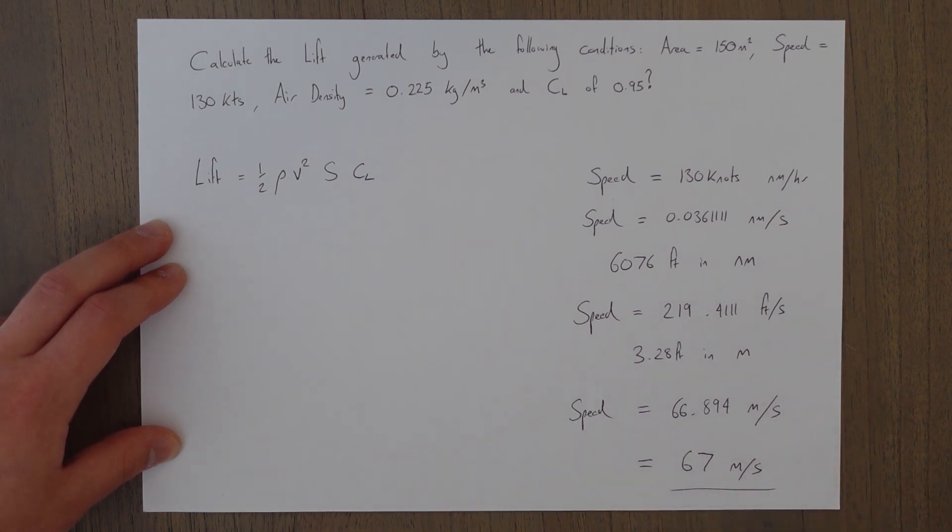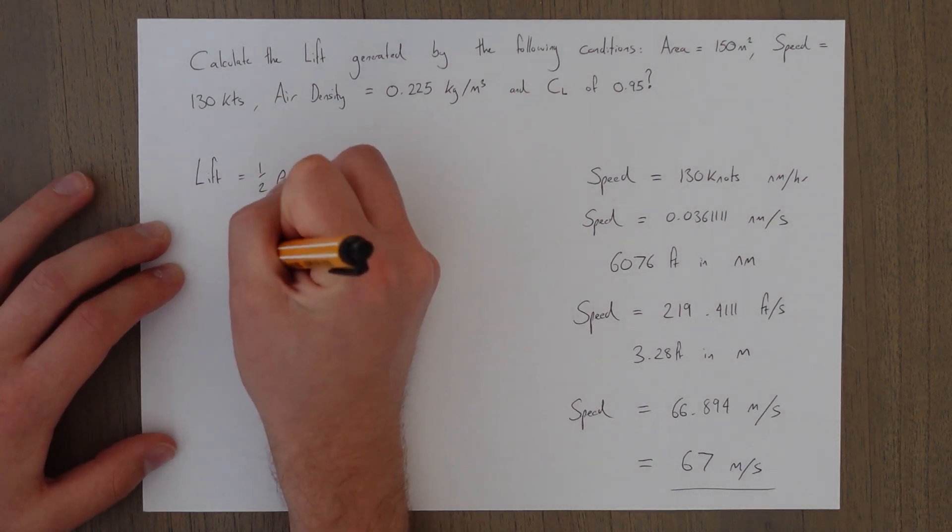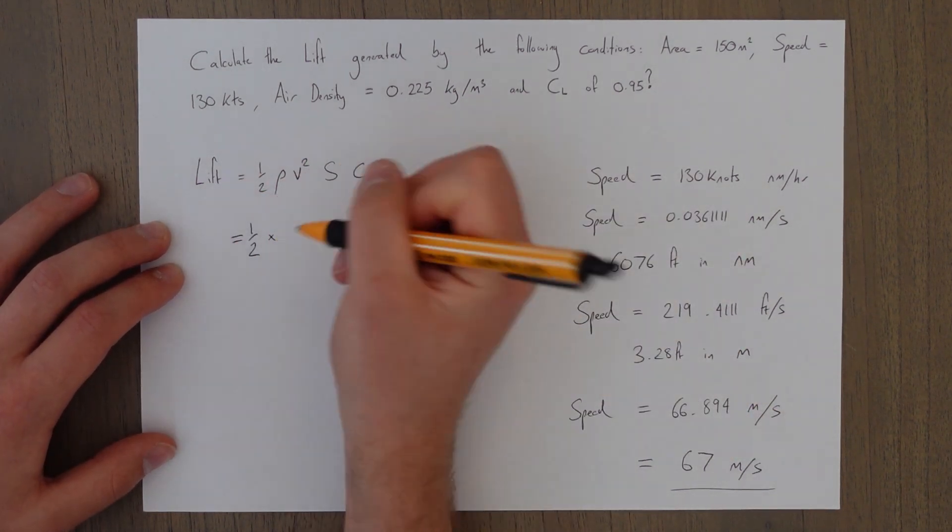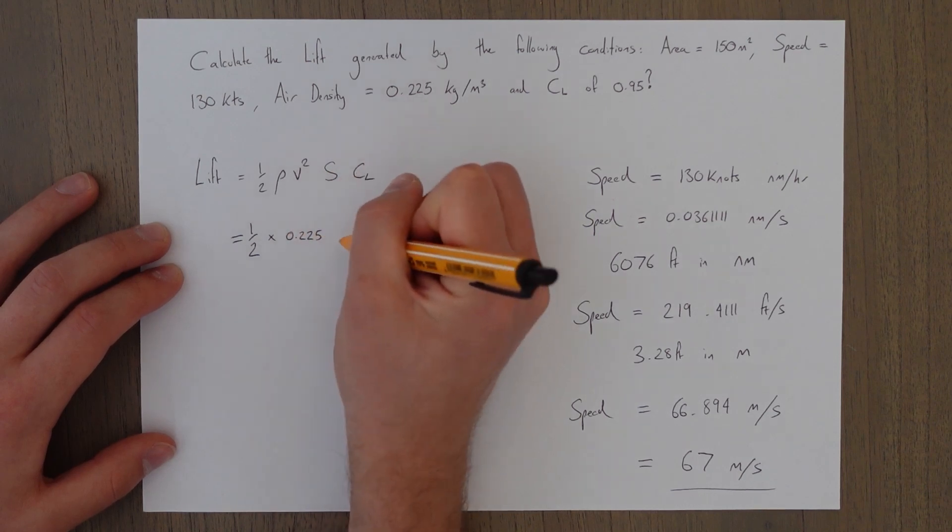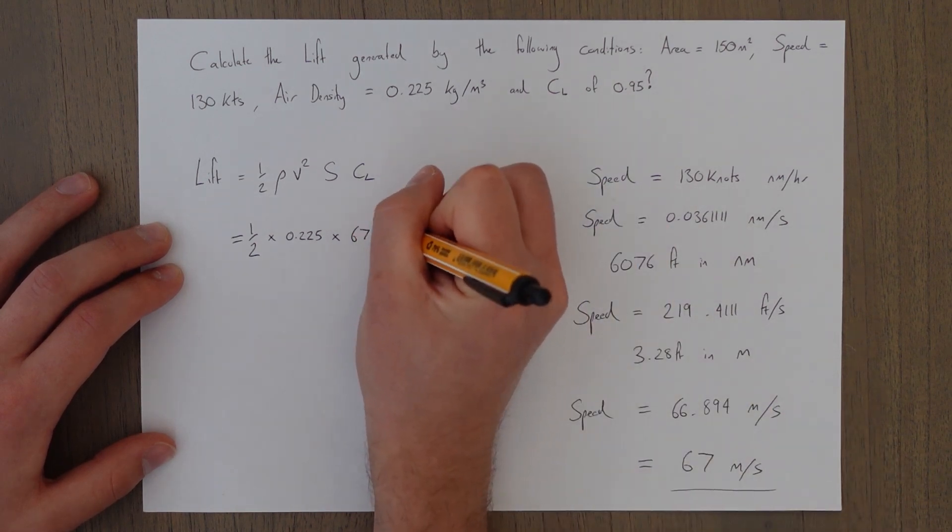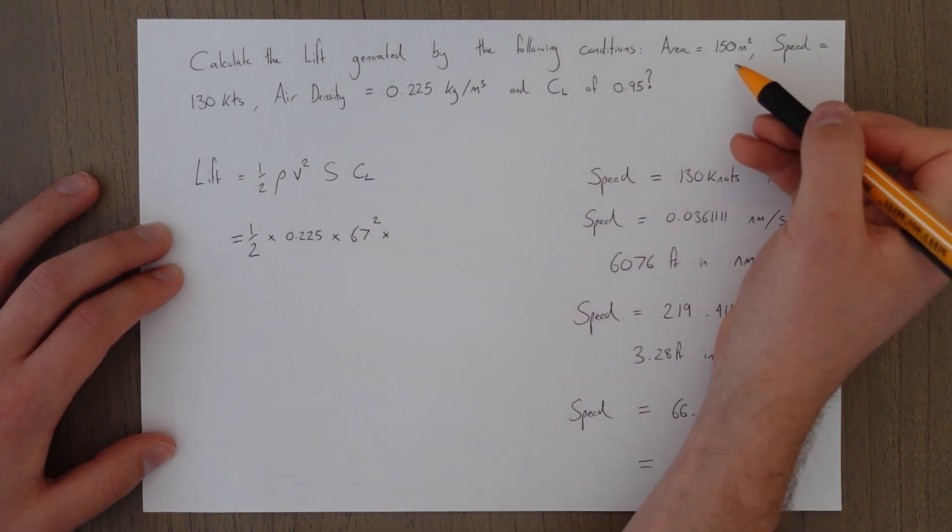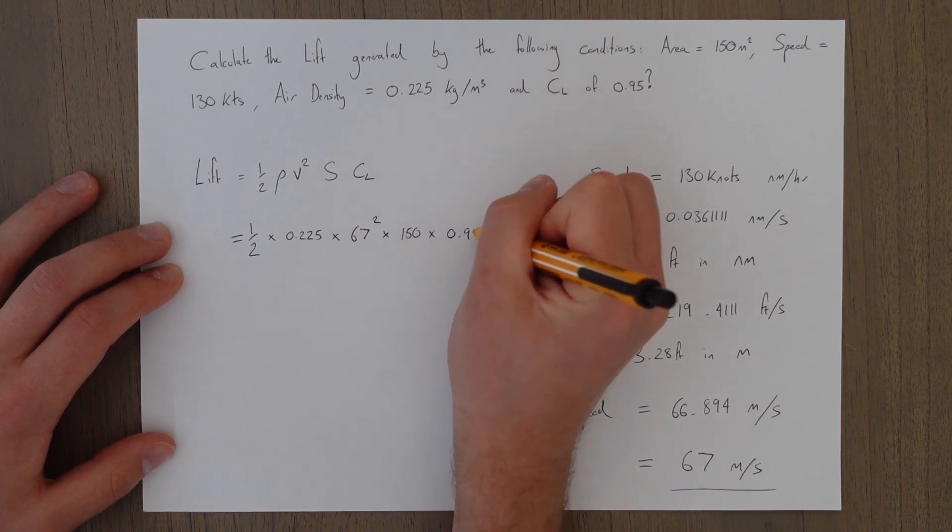Okay so that's conversion done, now we just plug everything in. So a half times the density rho 0.225 times the speed squared, worked that out before, 67 squared, times the area 150 times 0.95.